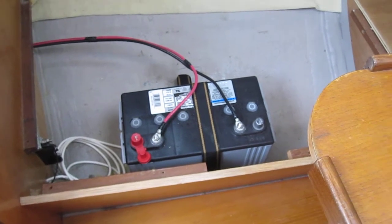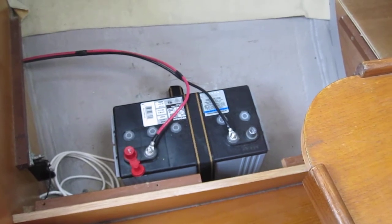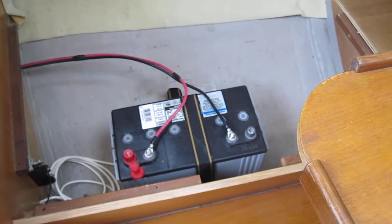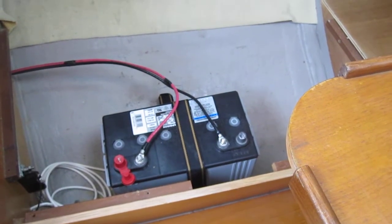It's a Group 27 AGM, which is an absorbed glass mat battery. It's permanently sealed, it doesn't vent, so that's a good battery to have in a closed settee like that.